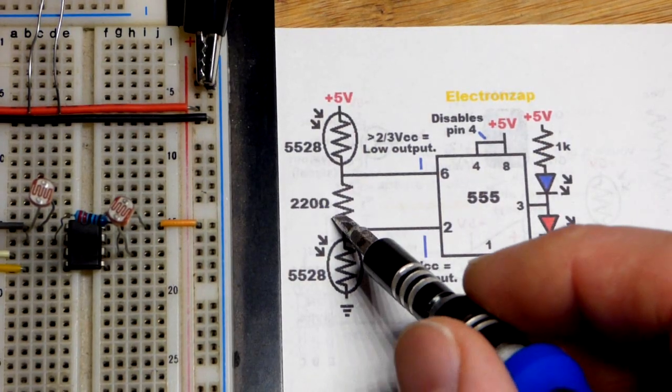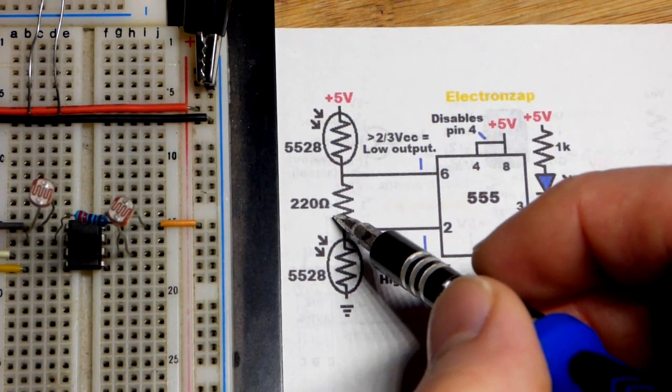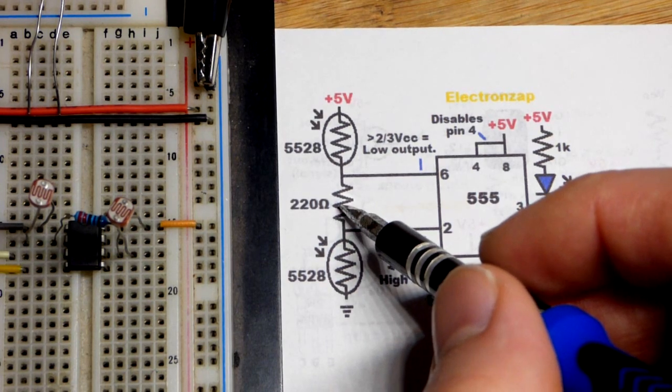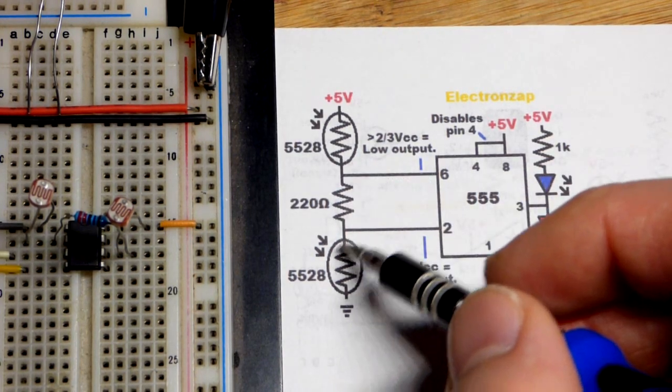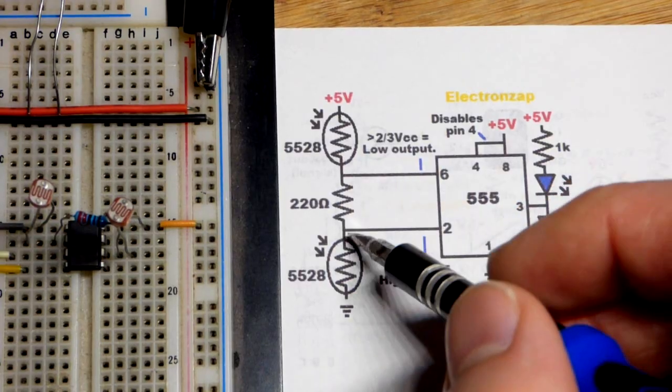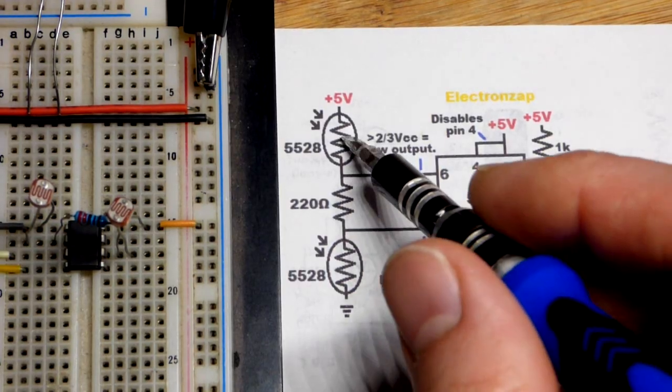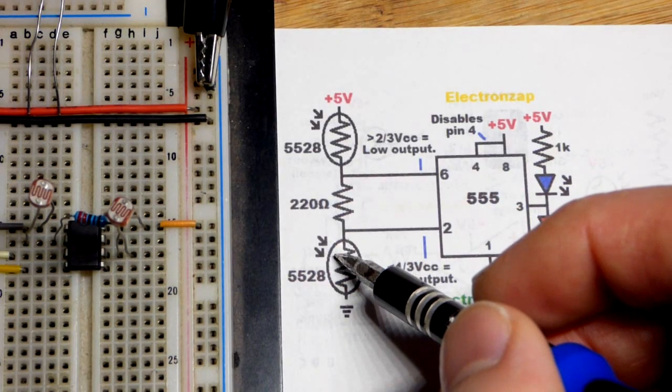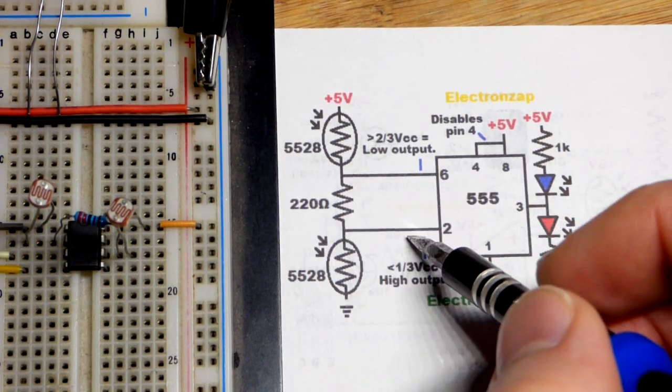Now this 220 ohm resistor, a higher value will make it a little bit harder to get one light or the other to change the voltage to the two pins right there. So it'd be kind of nice to not even have this at all, it would work.